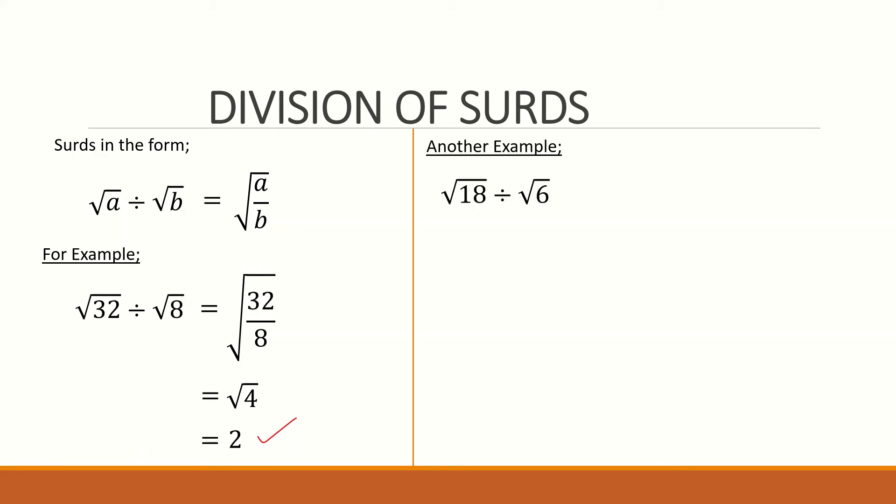For instance, I'm giving root 18 divided by root 6. What do I do? I take the square root of 18 divided by 6. So I divide first. That gives us root 3. I can decide to leave my answer in surd form for accuracy.